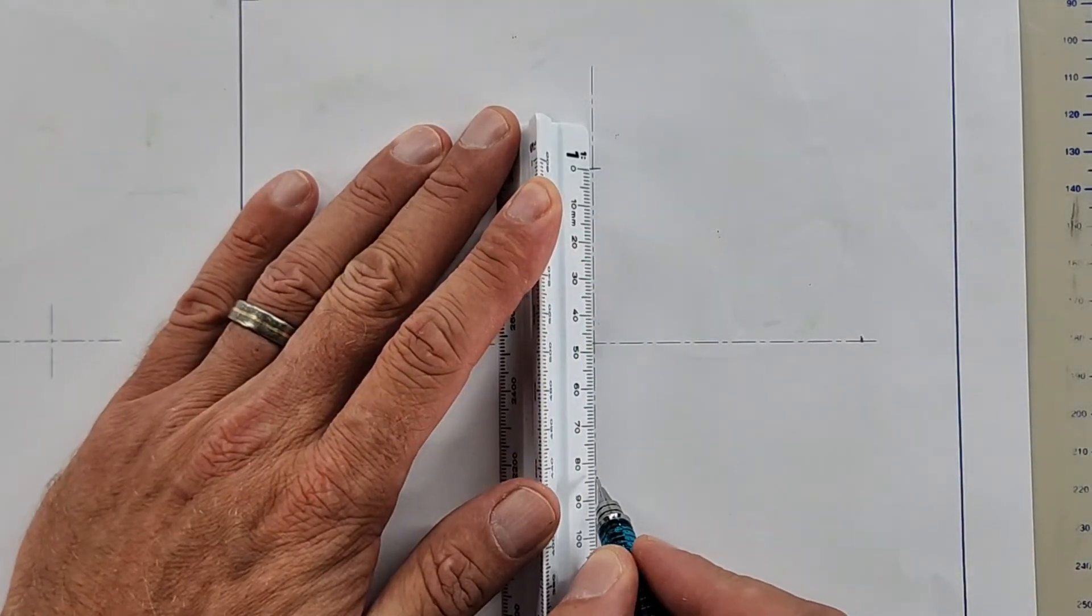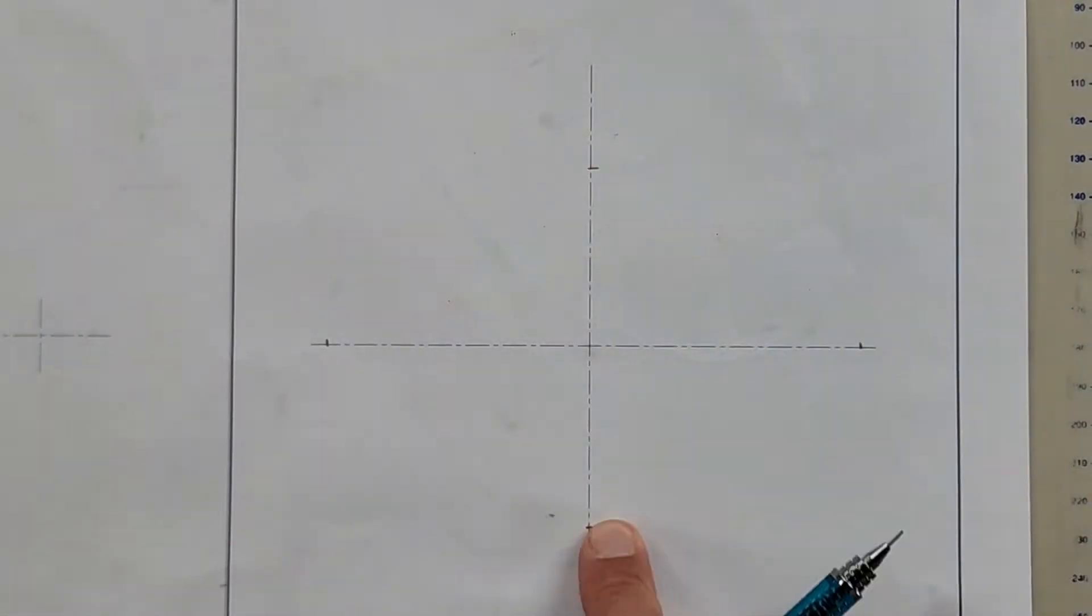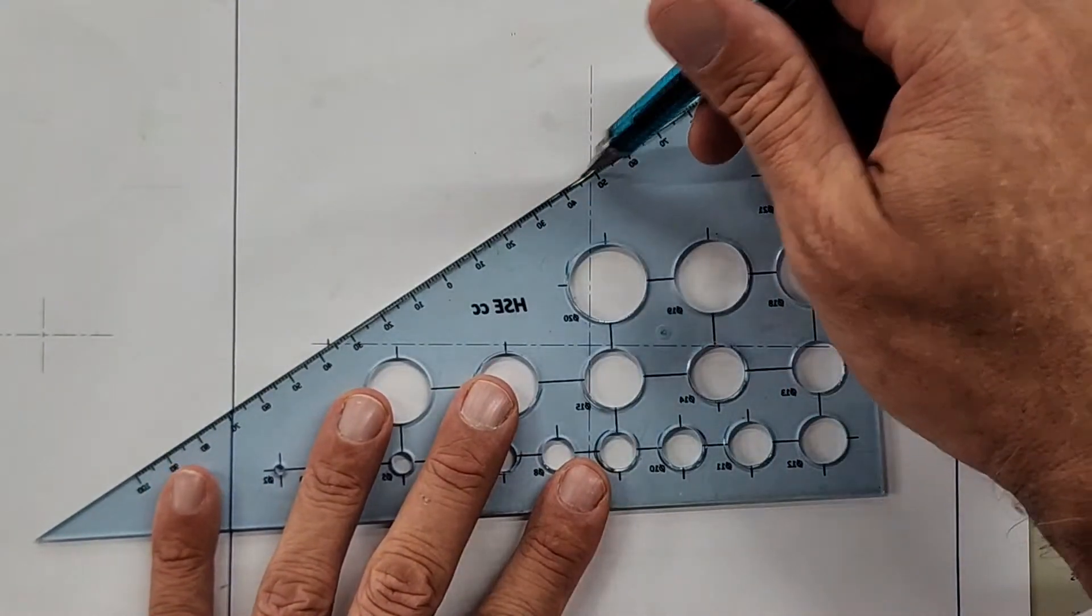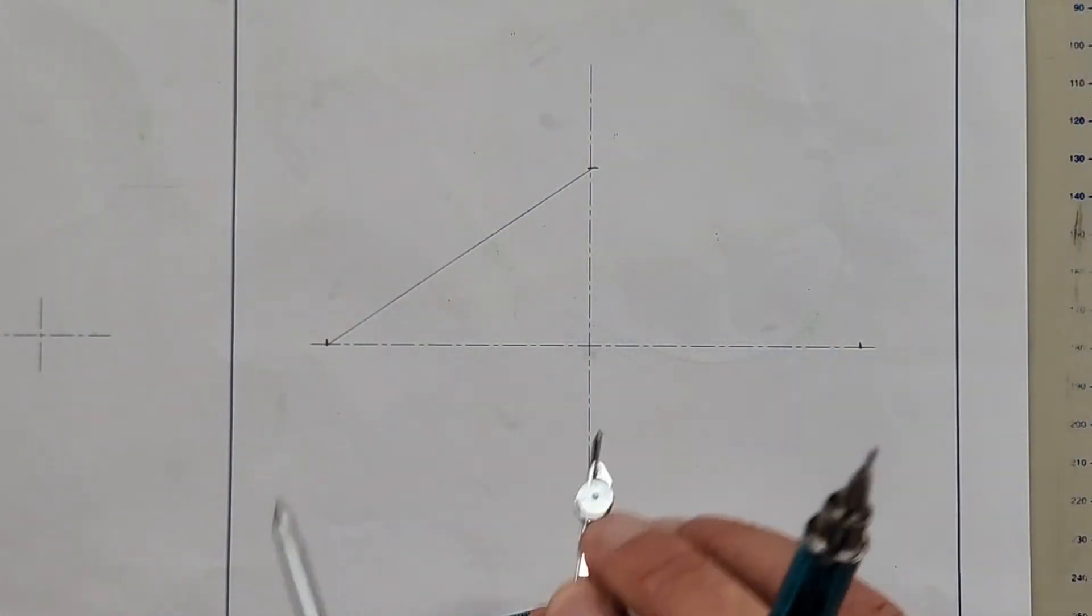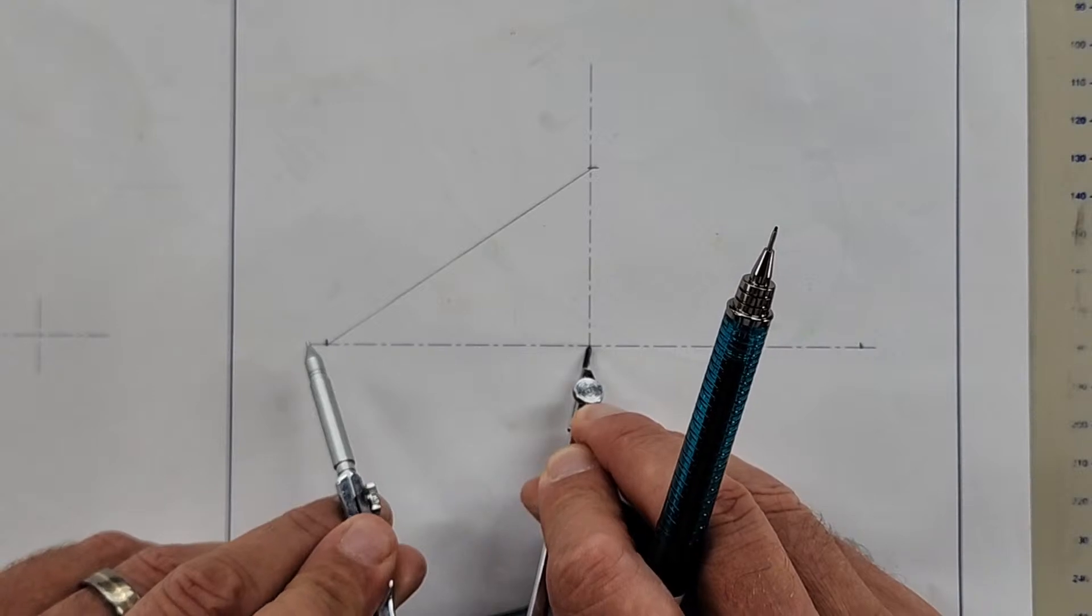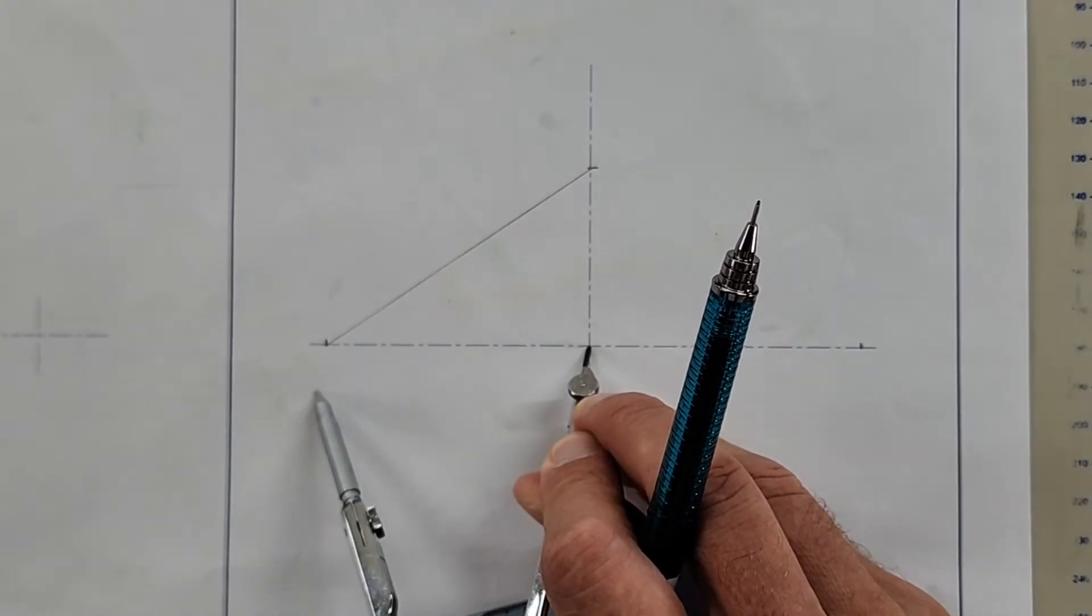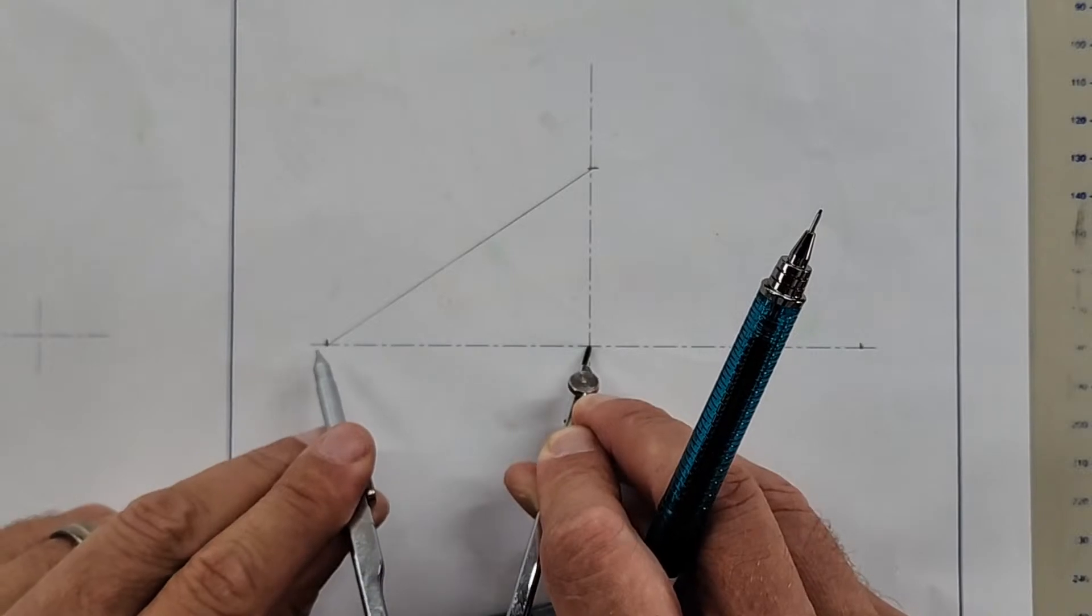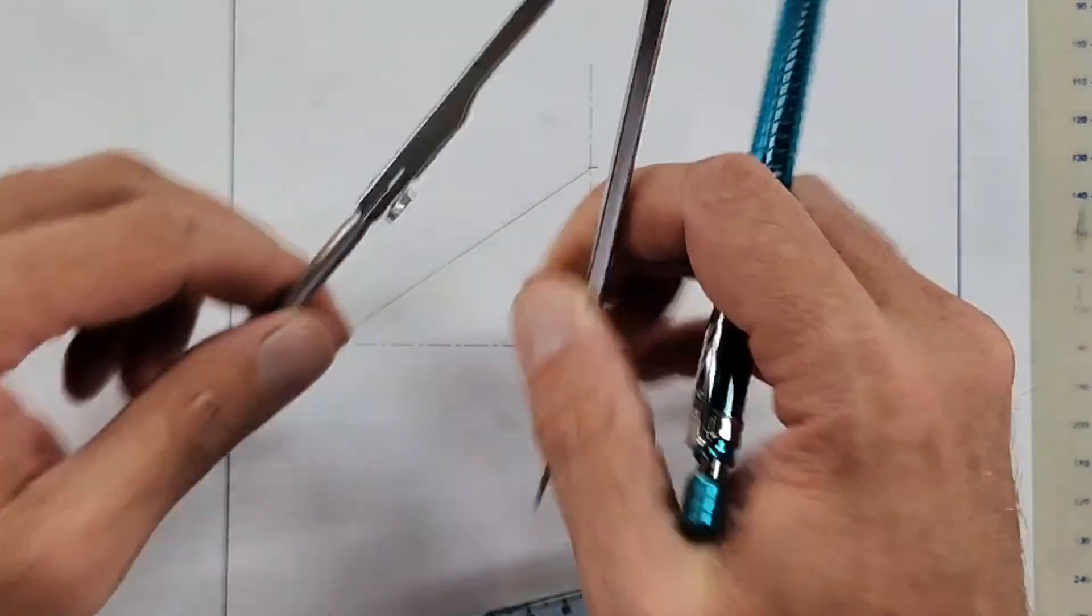Just like we did yesterday: major, minor. What's the next step? Minor to major construction line. Next step: from the center, this radius gets the arc. Construction line.